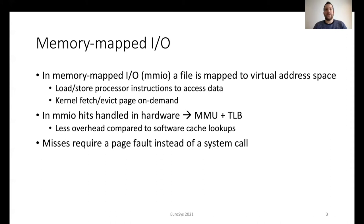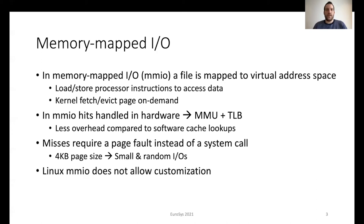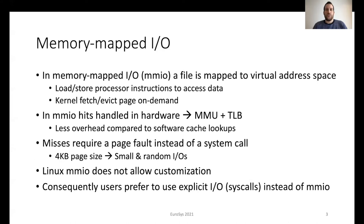On the other hand, misses require a page fault instead of a system call, and this introduces additional overheads. The 4KB page size that a page fault relies on also results in small and random I/Os. Another issue is that Linux memory-mapped I/O does not allow customization as it relies on the Linux page cache. Because of these issues, today user applications prefer to do I/O caching with system calls.